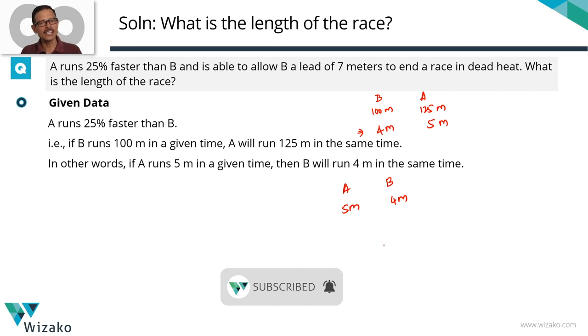So if A and B were to run a race of length, let's say the length of the race is equal to 5 meters. Take this. This is the length of the race, equal to 5 meters. When A completes 5 meters, he will find B having covered only 4 meters.